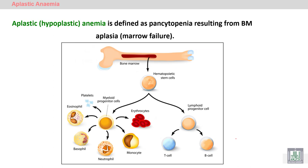Aplastic anemia is sometimes called hypoplastic anemia, depending on the severity. If there is a marked decrease in the blood cells, it is called aplastic. But if there is a mild to moderate decrease in the blood cells, it is called hypoplastic.